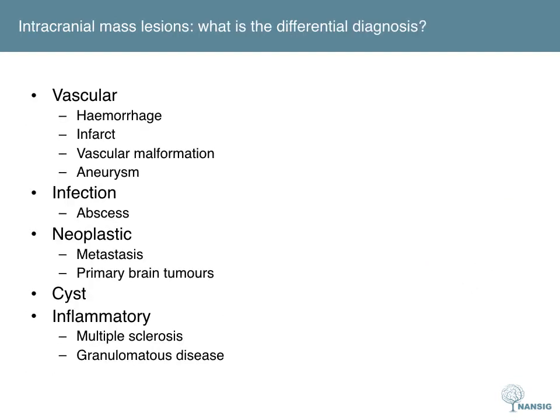For differential diagnosis, you should use a surgical sieve that includes the five main categories of brain lesions: vascular, infective, neoplastic, cystic, and inflammatory. Typically the ones you will see on exams are mainly vascular and neoplastic.